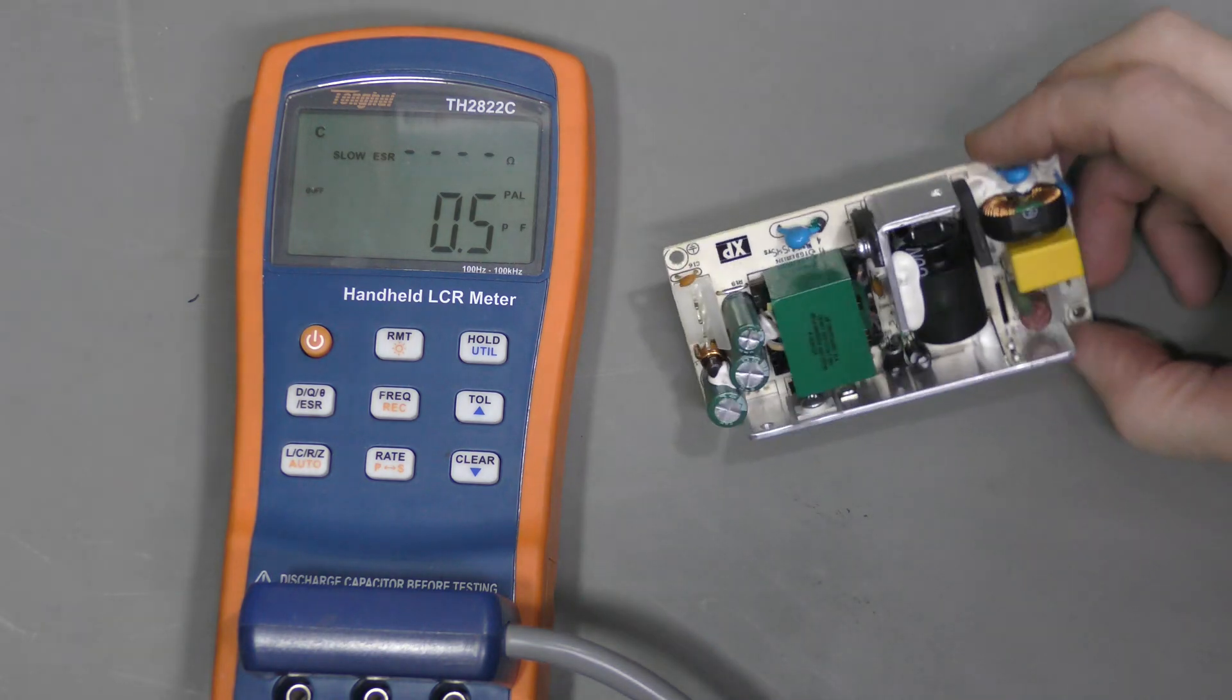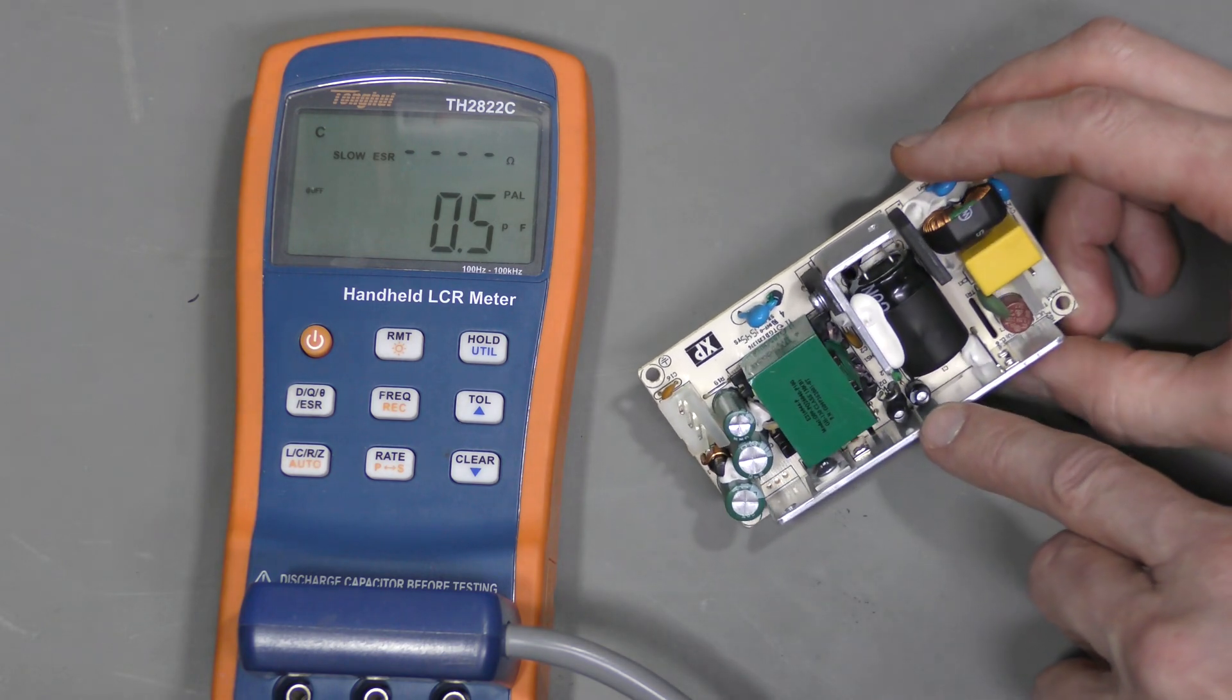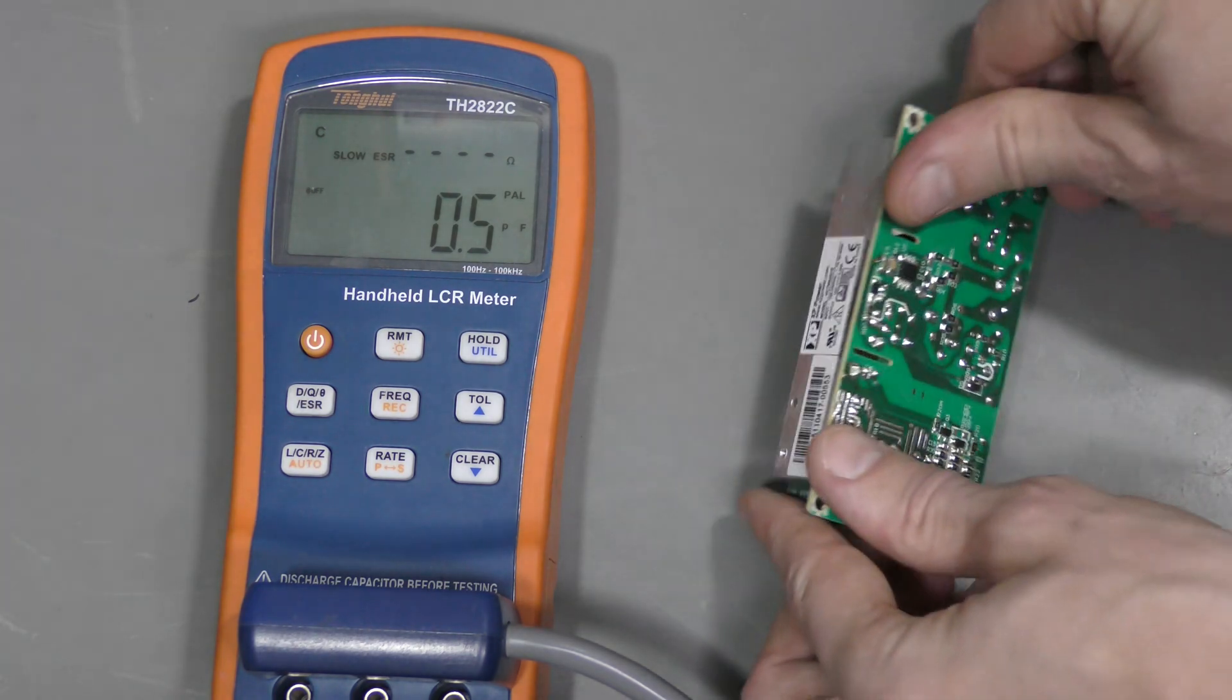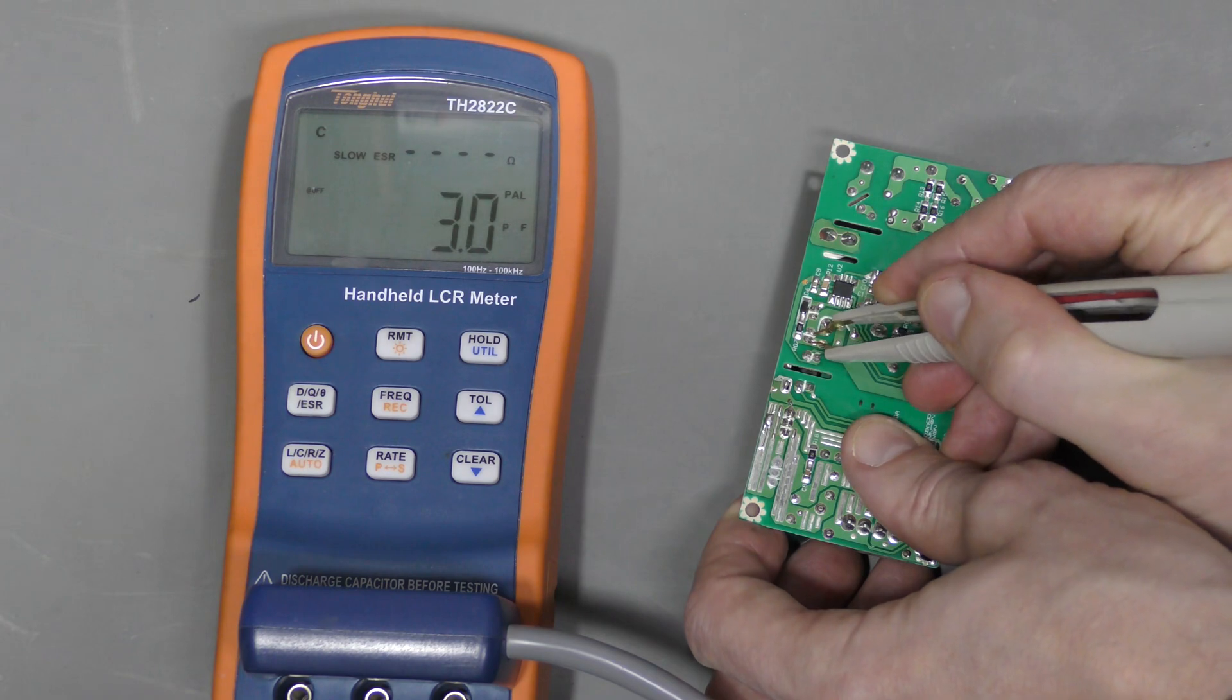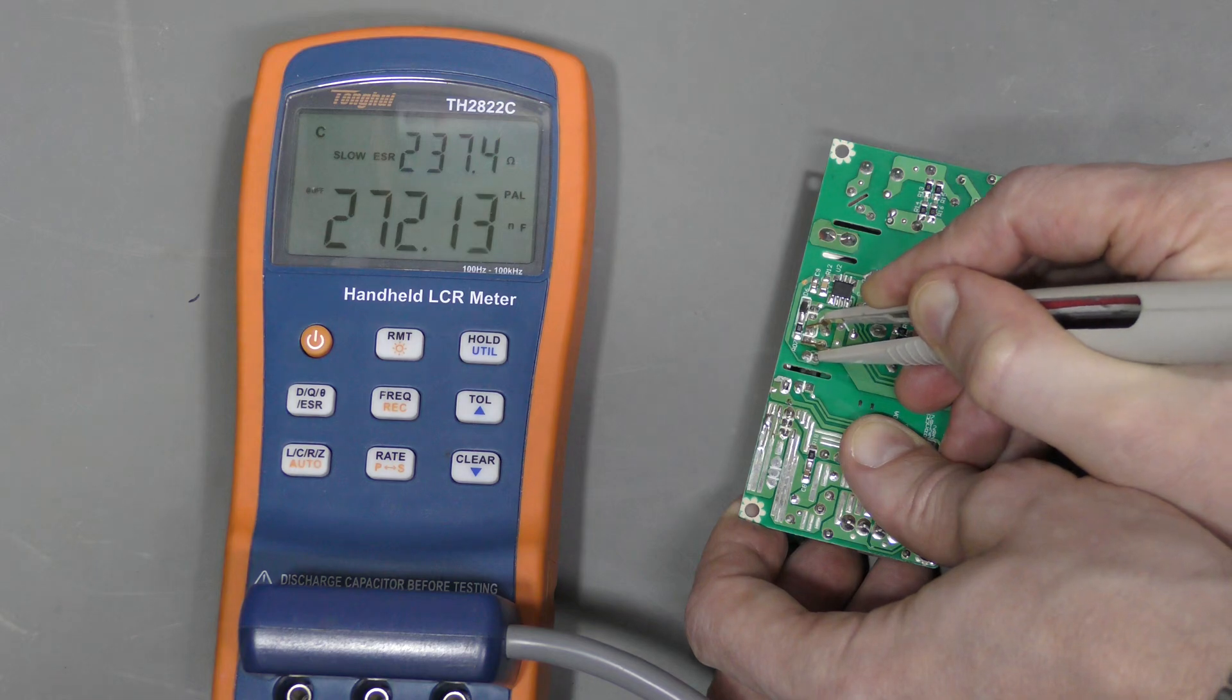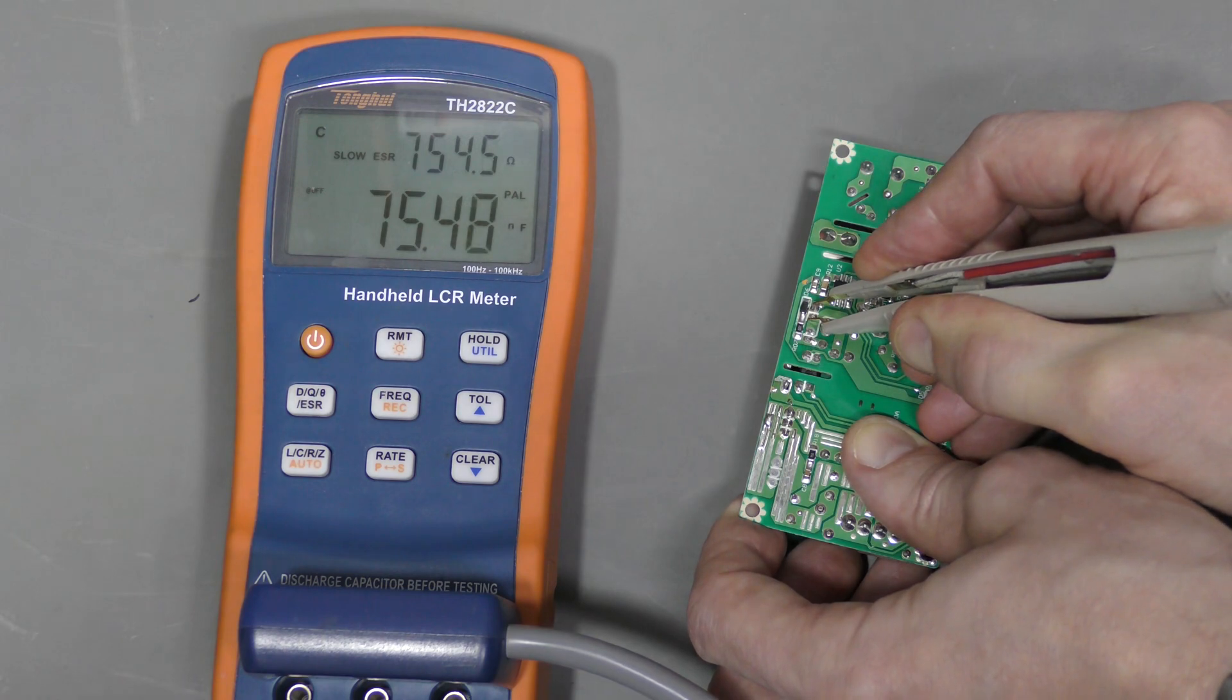Look what I found. These two, I believe, are small electrolytic caps with heat shrink on them for some reason. Marked C3 and C13. Must be just a few microfarads. But look at this. 270 nanofarads and 237 ohms ESR. And the other one. 75 nanofarads and 754 ohms ESR.